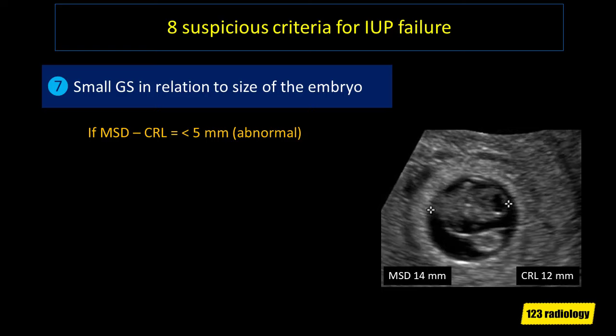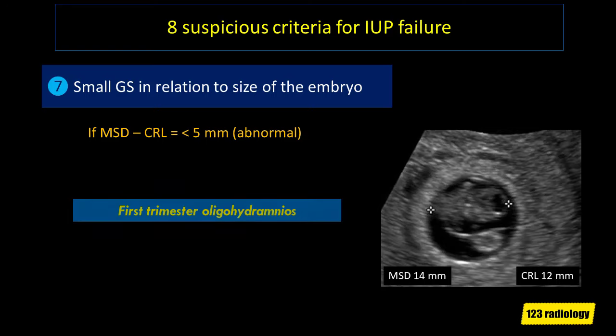The seventh suspicious criterion is a small gestational sac in relation to the size of the embryo. If the mean sac diameter minus the crown rump length is less than 5 mm, this is abnormal — sometimes called first trimester oligohydramnios. As you can see on this image, the mean sac diameter is 14 mm and the crown rump length is 12 mm, giving a difference of 2 mm. This is abnormal and suspicious for pregnancy failure, and follow-up ultrasound study is recommended.